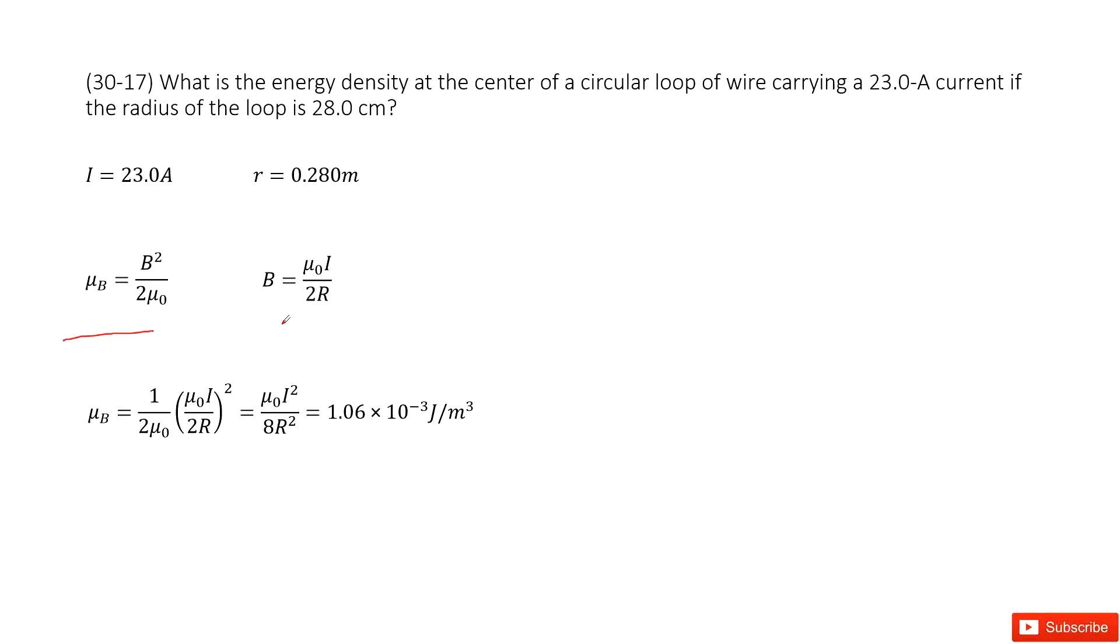I just used this equation for the magnetic field density at the center of a loop: B = μ₀I/(2R).